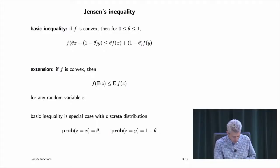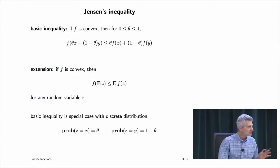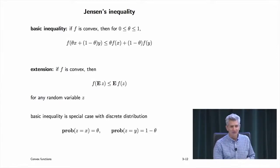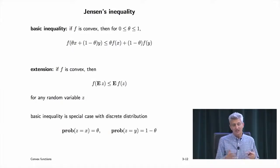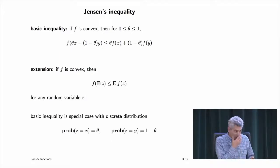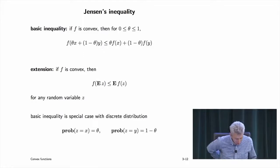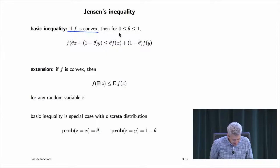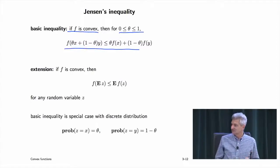Jensen's inequality — about a hundred years old. The basic inequality: if f is convex and theta is between 0 and 1, f(theta x + (1-theta)y) ≤ theta f(x) + (1-theta)f(y). That's actually the definition of convexity. Anyway, that's called Jensen's inequality.